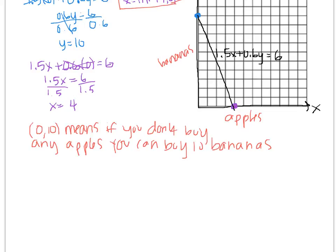And then the other intercept is very similar, only with the labels switched around. So 4,0 means if you buy 4 apples, you can't buy any bananas.